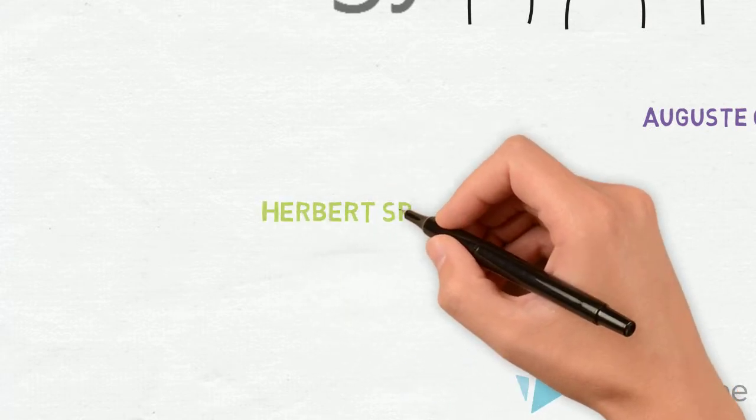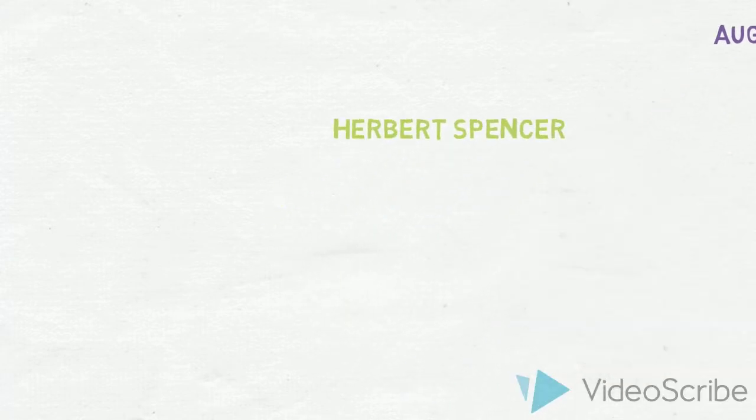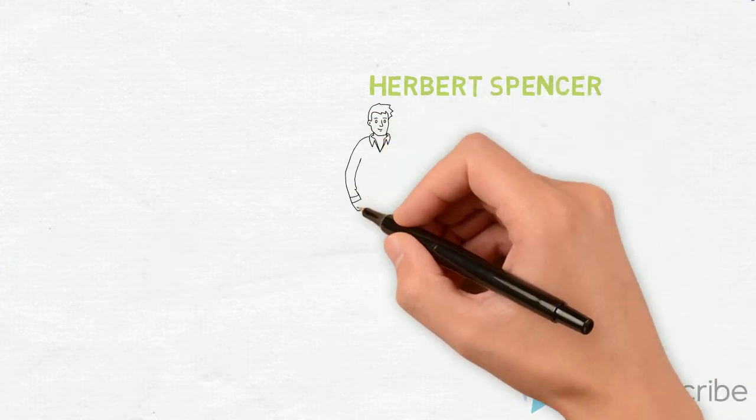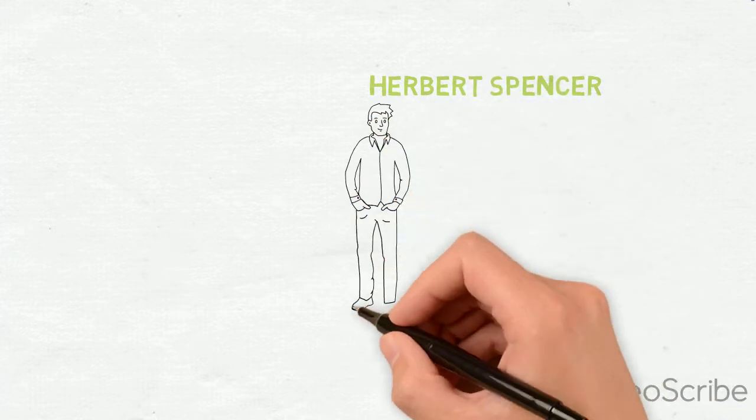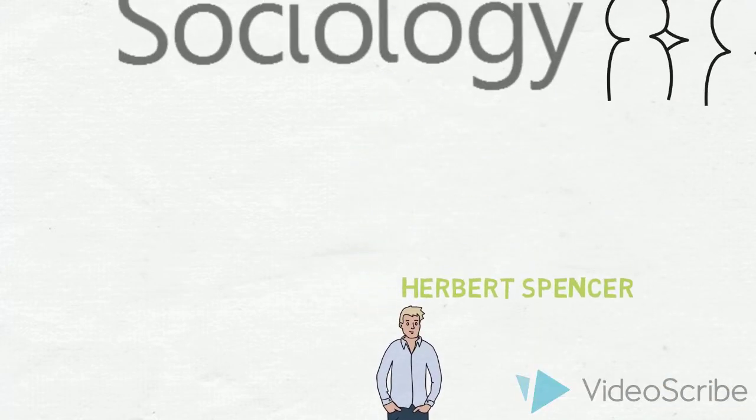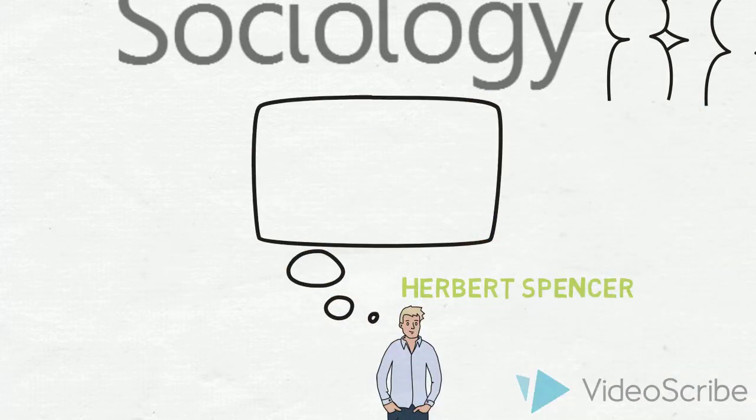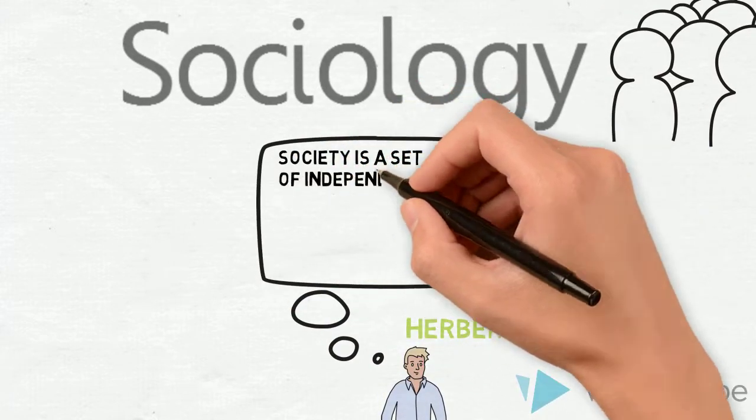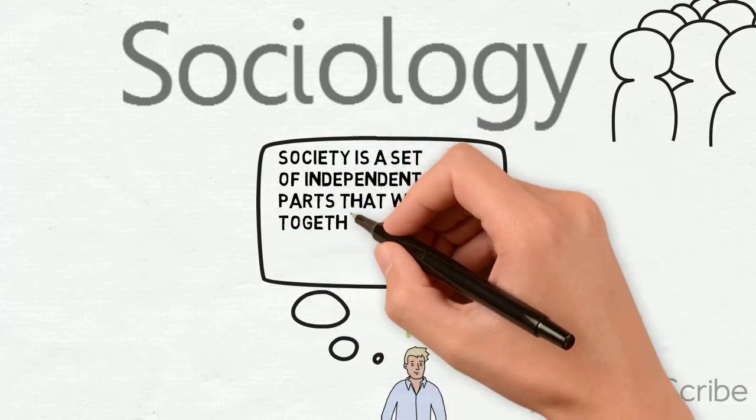Herbert Spencer was heavily influenced by the scientific theories of Charles Darwin and is credited with the creation of social Darwinism. Spencer said society is a set of independent parts that work together to maintain the system over time.